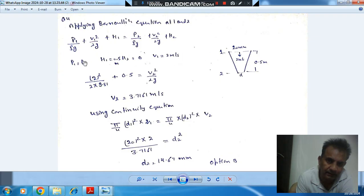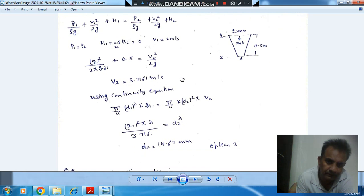So v1 is 2 meter per second and pressure is atmospheric everywhere, so p1 equals p2. From this, putting these values, we can find out v2, so v2 comes out 3.716 meter per second.